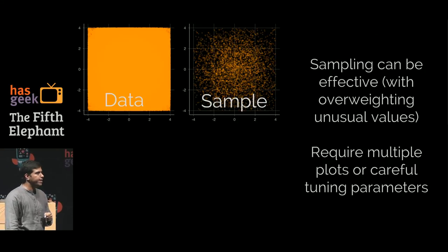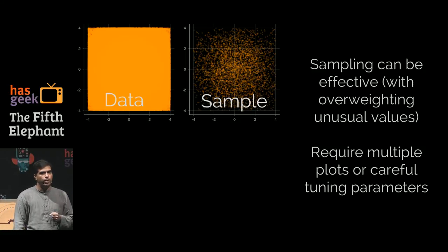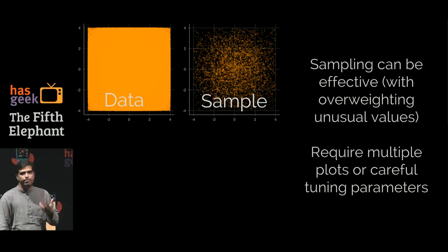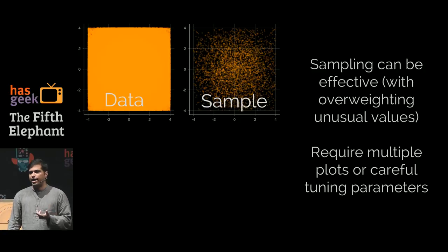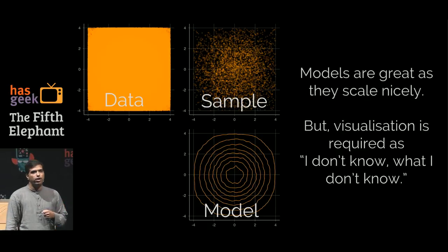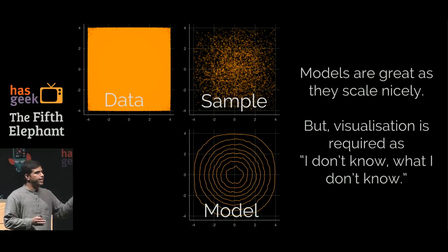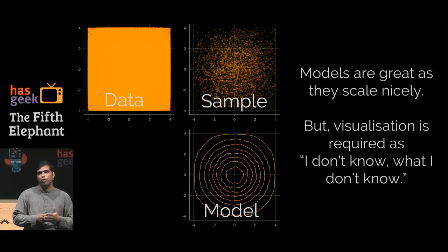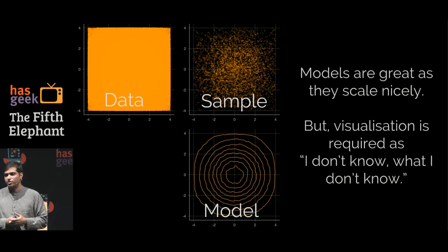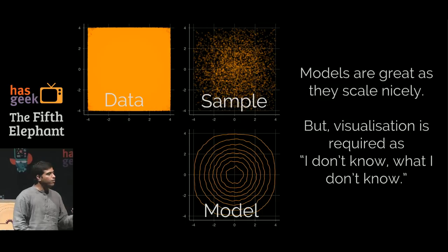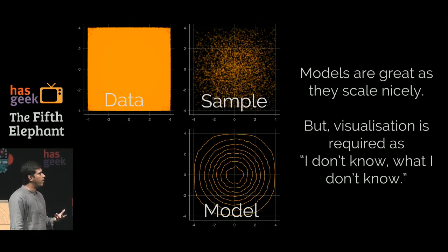I can maybe sample it. Sampling can be effective as long as I'm doing overweighting for the unusual values. I may need to create multiple views, I may have to be careful about tuning parameters, but sampling is one way to look at it. Or I can actually model it. Modeling is really effective because the model can scale much better than visualization can. Visualization is great at looking for patterns, but visualization doesn't scale as we've rightly seen. But visualization is also good for finding out things that I don't really know. I really want to do visualization because I don't know what I don't know. Because if I knew it, I would have modeled it. If I want to do that, I really want to visualize it, and the only other way to think about it is to bin it.